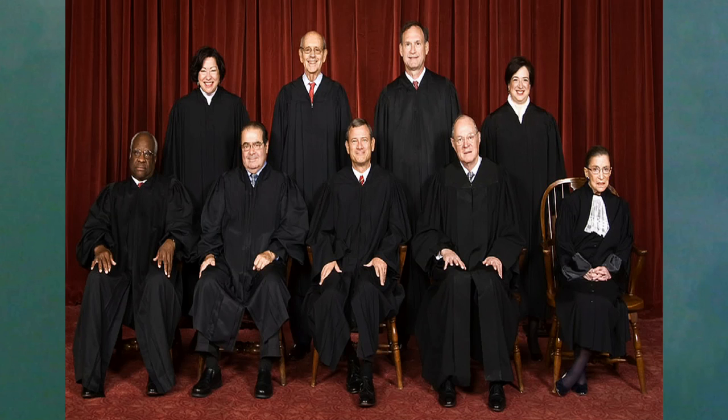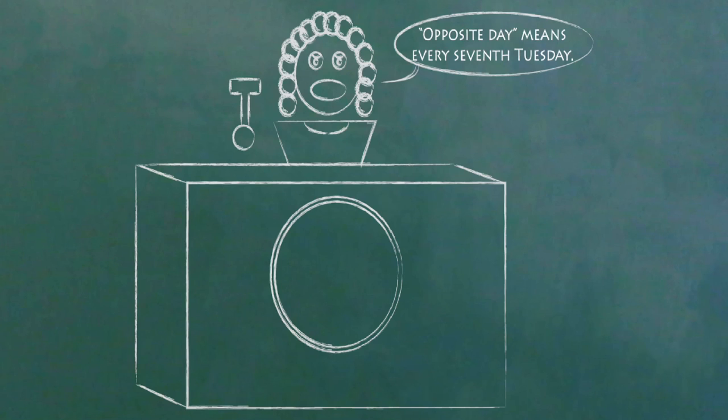Finally, we have the judicial branch, at the top of which is the Supreme Court. This is the branch that interprets the Constitution and deals with court cases about federal laws, including deciding what a vague law means.